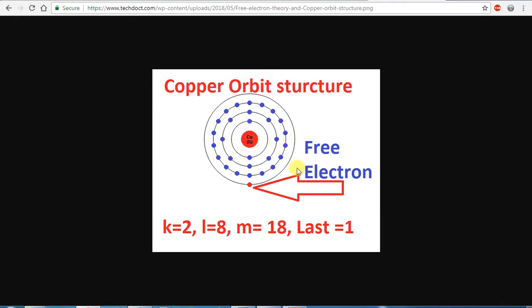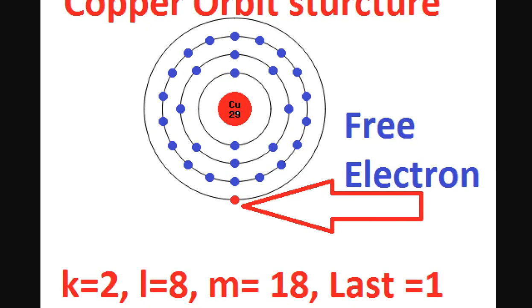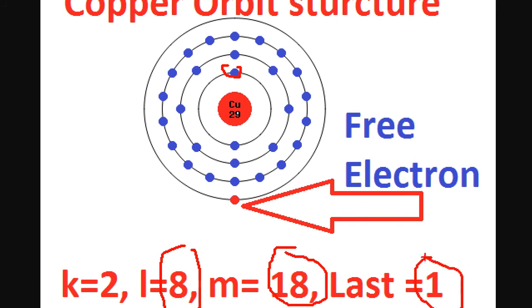First, we will talk about atomic structure. The atomic structure of copper is 29. In the first shell there are 2 electrons, in the second shell there are 8 electrons, in the third shell there are 18 electrons, and in the outermost valence band there is 1 electron.